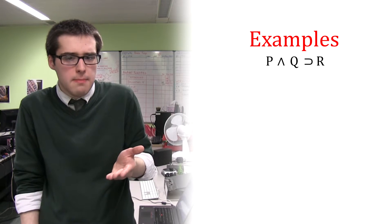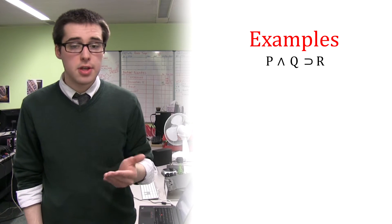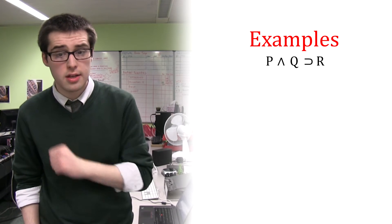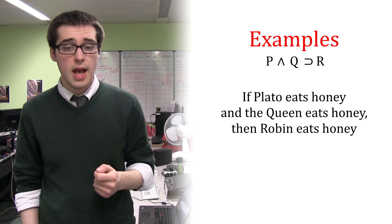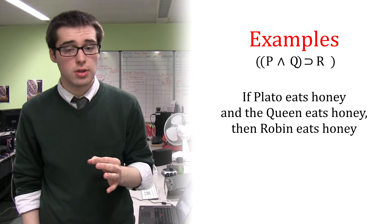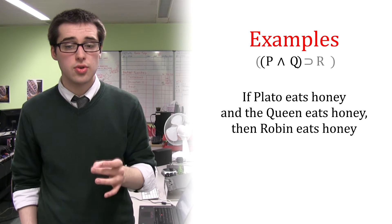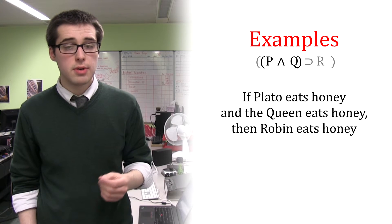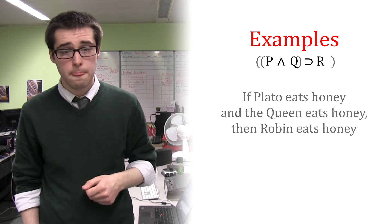Brackets are placed in whichever way makes the formula the most charitable translation of the natural language sentence it translates. For example, the sentence, if Plato eats honey and the Queen eats honey, then Robin eats honey is a conditional, where the antecedent is a conjunction of Plato eats honey and the Queen eats honey, and would be written with these brackets.